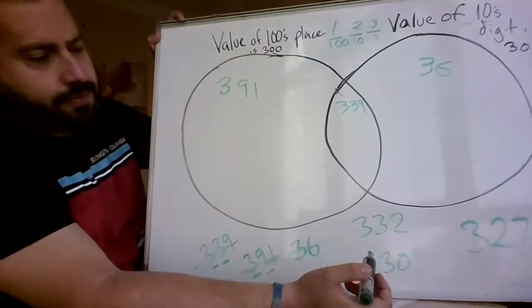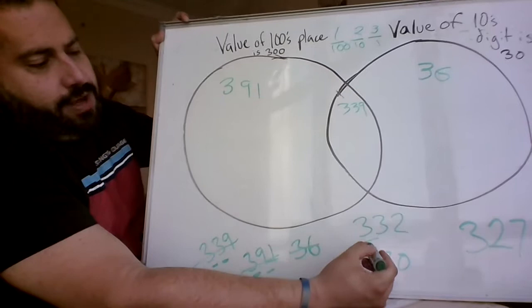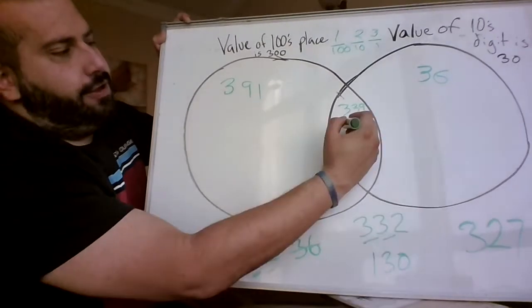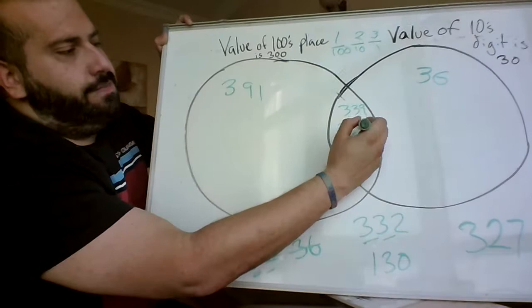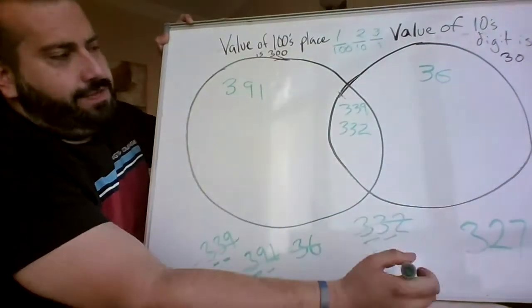Let's move on to number 332. We have a 3 in the 100s place, a 3 in the 10s place. Looks like this one goes in the middle because it has both. Cross it off so you know you did it.